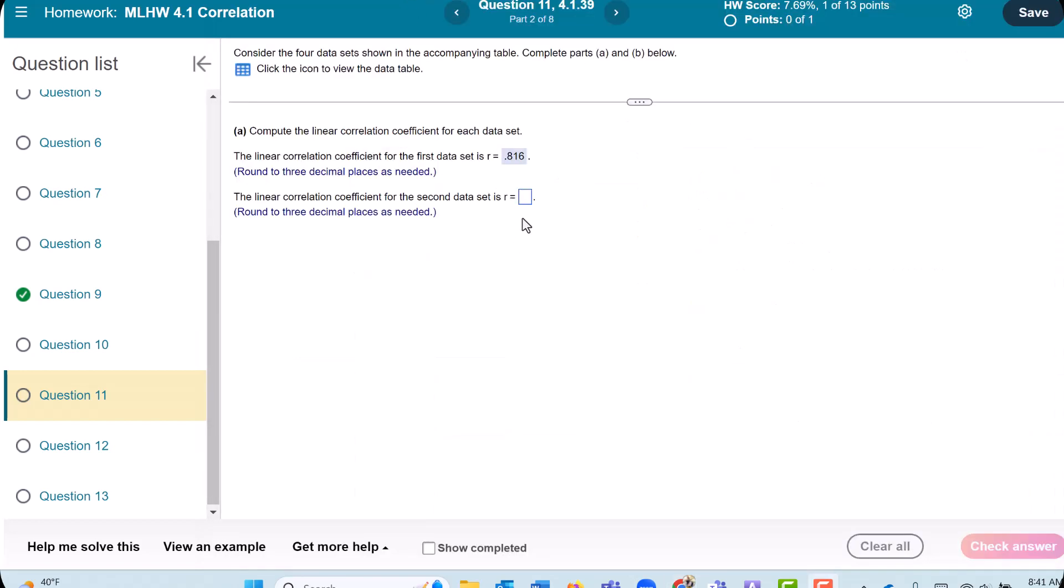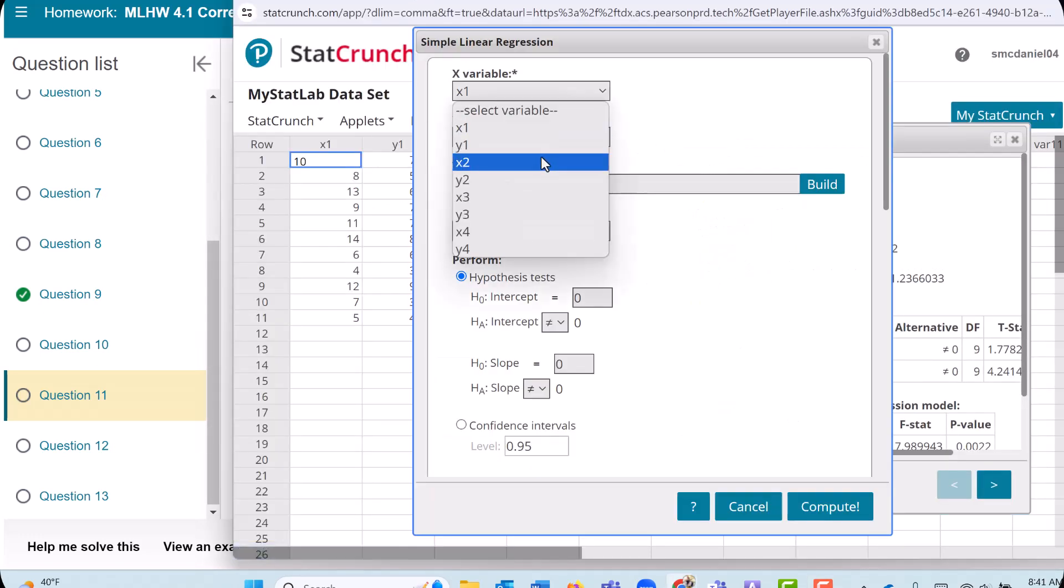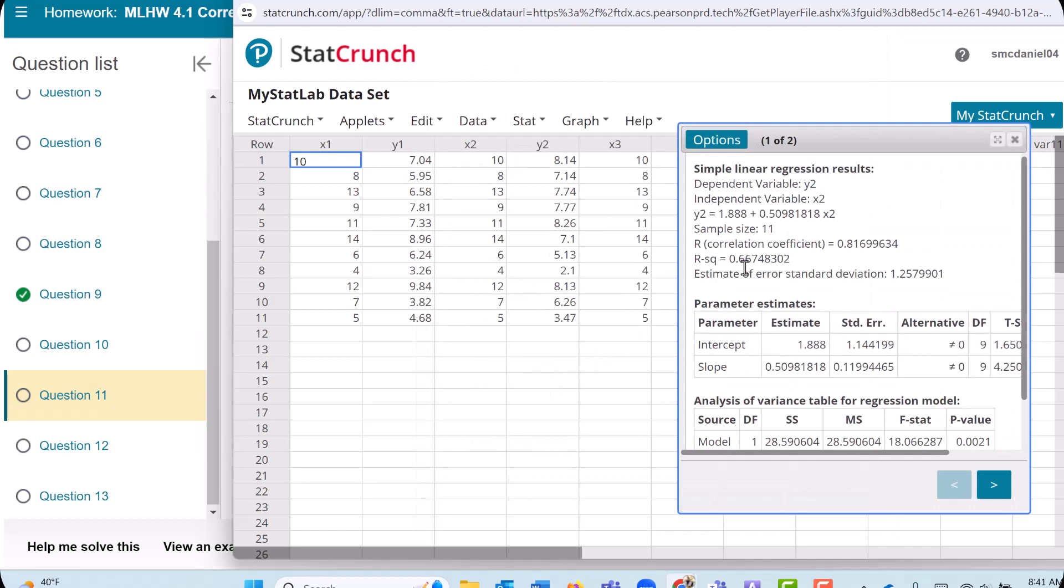And we go ahead and repeat for the next three data sets. So I can go here to Options and Edit, and just change this now to X2 and to Y2. Just make sure you get the right data set there. Press Compute, and notice we get 0.817, pretty close to the 0.816.